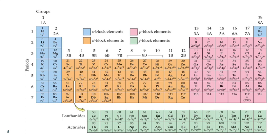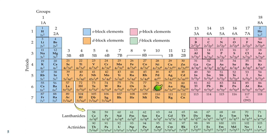Here's a periodic table from Chem 1A showing these electron configurations. Here we've got 5s2 and we're adding into the 4d's. Over here we start out in the 5d, but then we get into the lanthanides, which are filling up the f orbitals, and then we come back and finish filling up the 5d. But for all of these, the valence electrons are those s electrons.